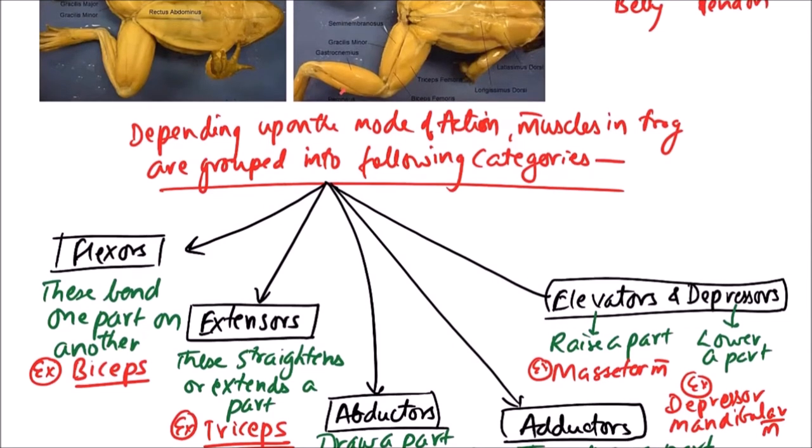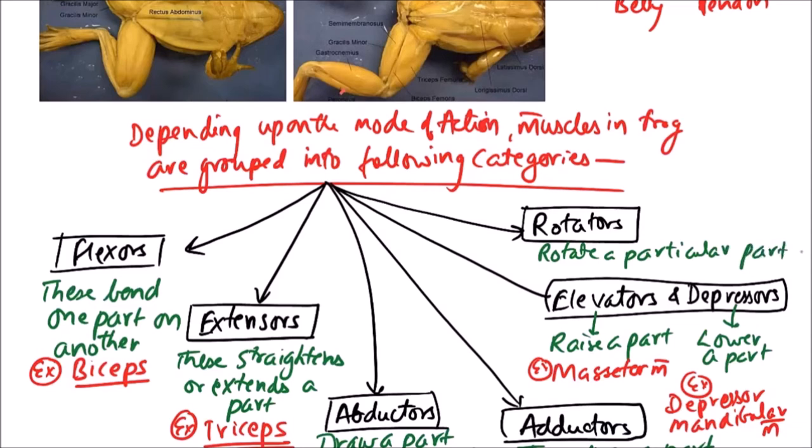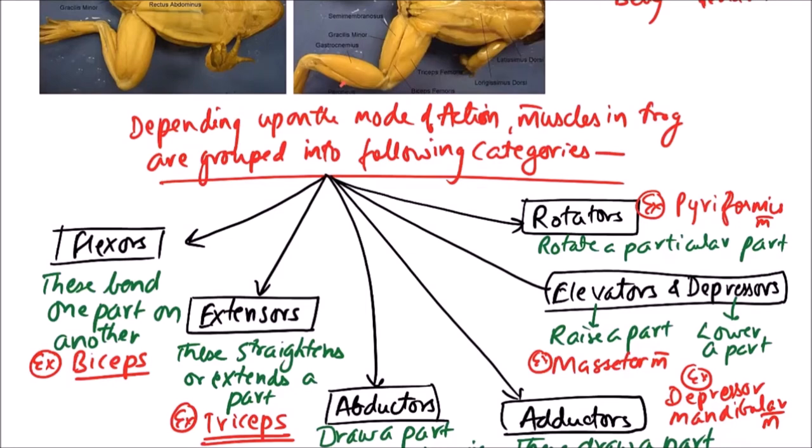Then next category of muscle is rotators. Rotators rotate a particular part. The examples include piriformis muscle.